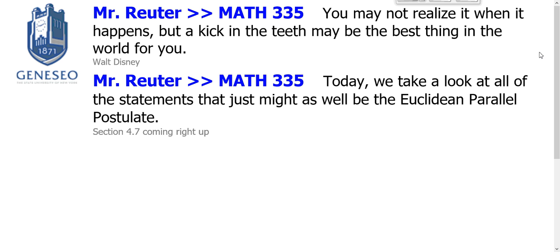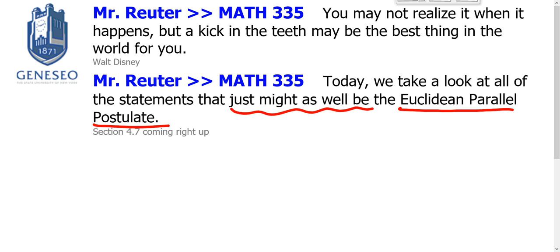We're about to enter the strange part of neutral geometry. There are a lot of things you think are true because you bring them from your high school experience, and many of those things are only true in Euclidean geometry. What we would like to do in this screencast and in section 4.7 of your textbook is identify those things that are equivalent to the Euclidean parallel postulate — things you might say without realizing you've left neutral geometry.